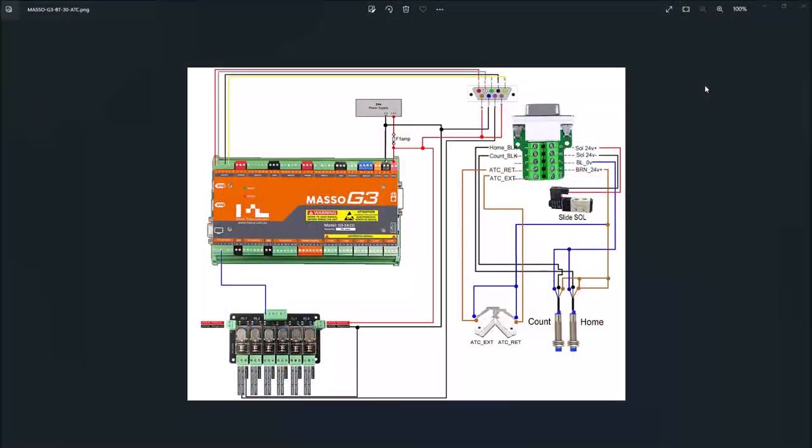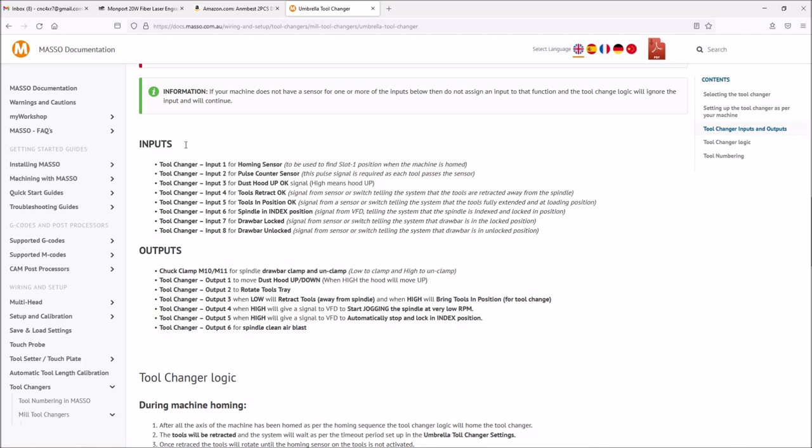Here is the Masso BT-30 tool changer wiring diagram. So let's go over some of the things needed specifically for the Masso G3 and the umbrella tool changer. Masso designed a lot of different features into the logic for the umbrella tool changer, and we will not be using all of these, but we will be using input one here for the home sensor, input two for the pulse counter, input four for the tools being retracted, and input five for the tools being in position for a tool change.